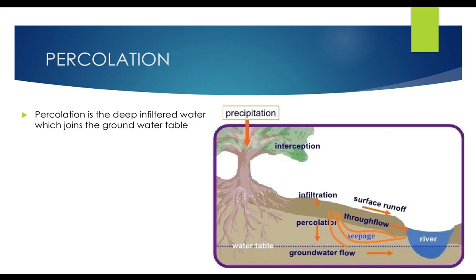Next — percolation. We have seen infiltration and surface runoff. Some of the infiltrated water gets deep into the soil and joins the groundwater table. This is called percolation. Percolation is the deep infiltrated water which joins the groundwater table.